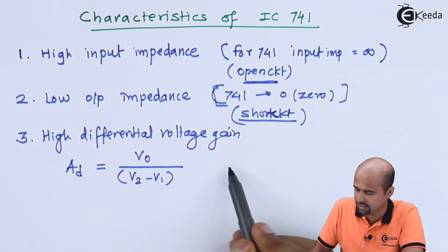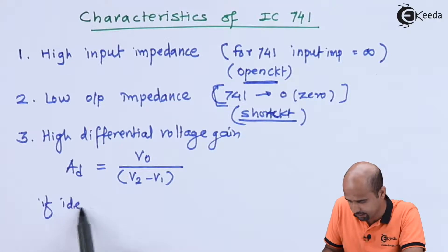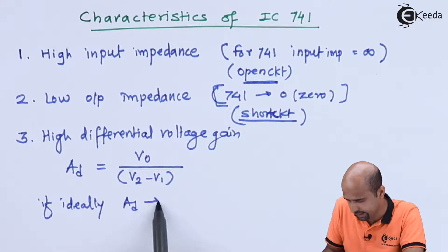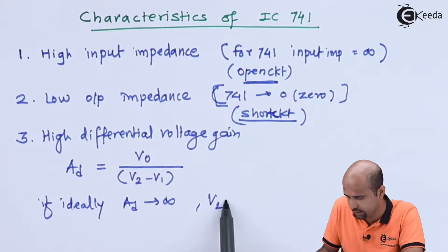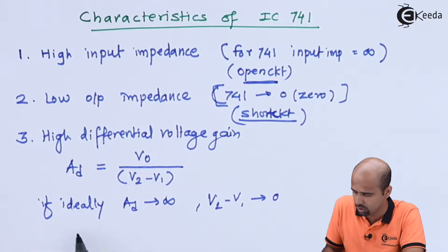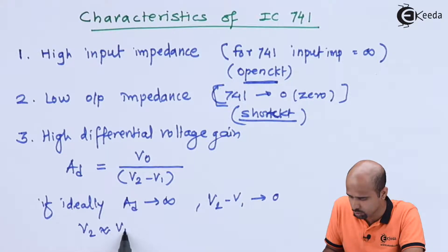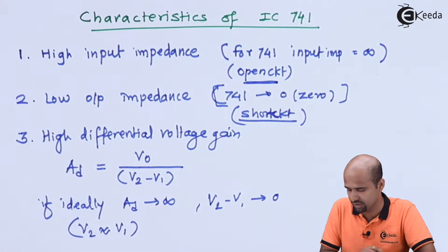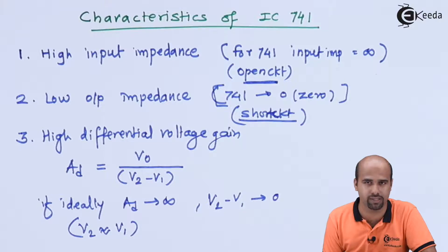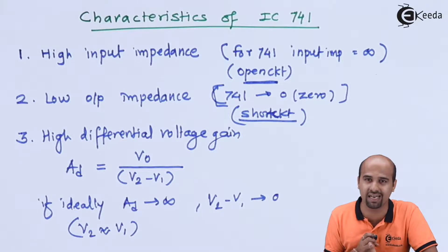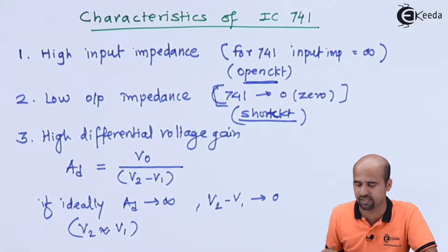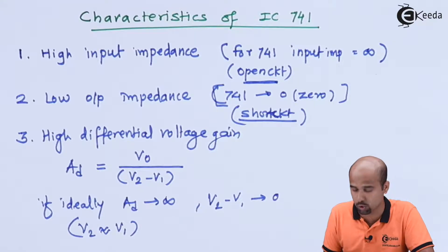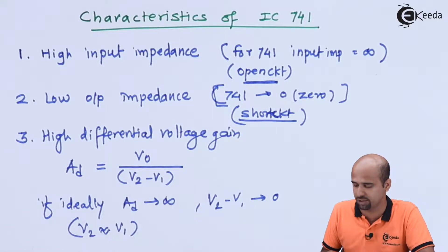If ideally AD tends towards infinity, then V2 minus V1 tends towards zero, meaning V2 is nearly equal to V1. The intention of this operational amplifier is that we have a very, very small difference in the input voltages, and even that small difference is sensed by the operational amplifier. This is the third and very important characteristic of the operational amplifier 741: high differential voltage gain.